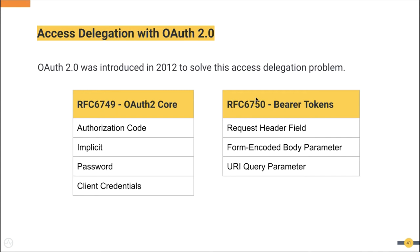The first grant type is the authorization code grant, which can be used for web apps and native apps. The second is the implicit grant, which has similar usage and is mostly used for JavaScript-based applications. Then there is the password grant, which was planned as a migration strategy to move from credentials into OAuth 2.0, but we saw it being used for first-party applications as well. Next is the client credentials grant, which is used for server-to-server authentication. They also later introduced RFC 8628, the device authorization grant, to handle browser-less or input-constrained devices. RFC 6750 explains how to use Bearer tokens in HTTP requests to access protected resources — basically you add it in the authorization header, as a request body parameter, or as a URI parameter.